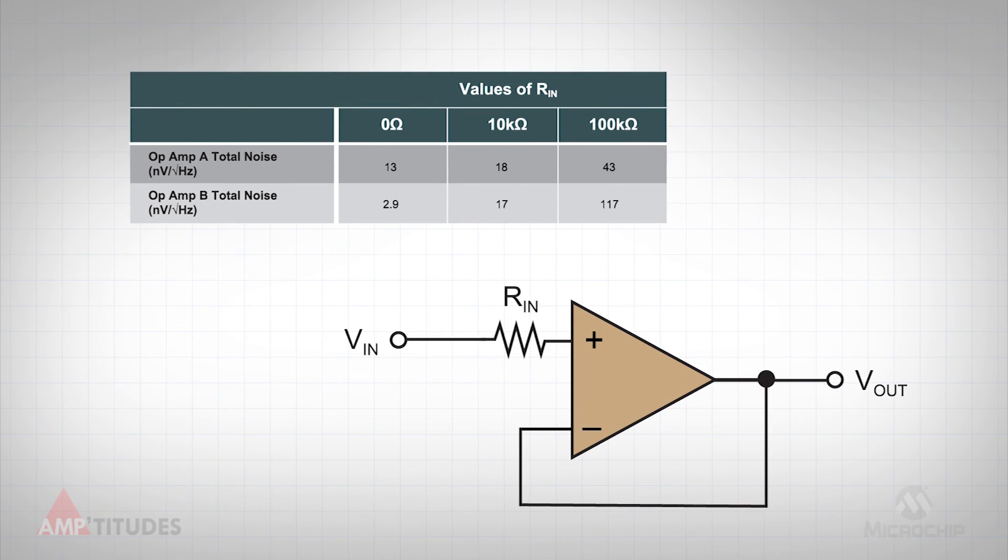This simple circuit example highlights the fact that an amplifier's voltage and current noise must be taken into consideration when analyzing the noise performance of an amplifier for a given application.